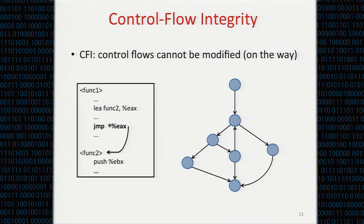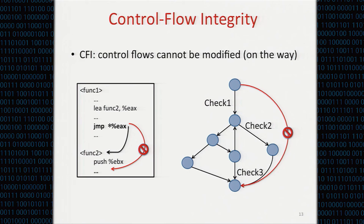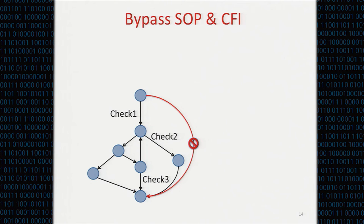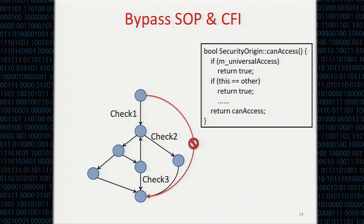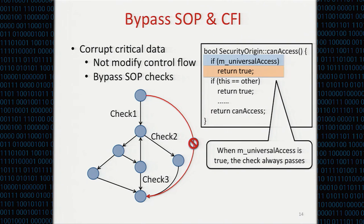Is it possible to skip these checks? The first thing you may think is to modify the control flow — creating a new flow or modifying the existing one to skip these checks. However, Chrome uses CFI to prevent these code-reuse attacks that alter control flows. If we cannot change the control flow, we may change the data flow. We found that SOP checks are determined by security functions like canAccess, which is influenced by decision-making data called mUniversalAccess. When we set this flag as true, the check always passes. We found many such critical data points — once we craft them, even without modifying any control flow, we can bypass SOP checks and access cross-origin data.